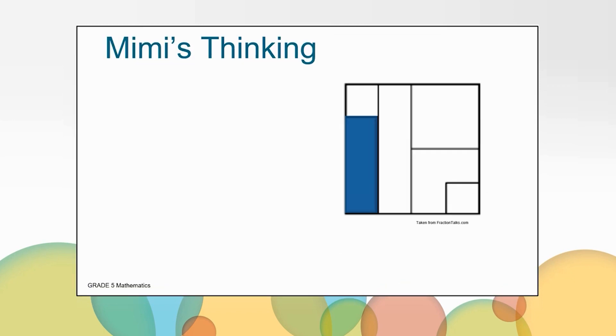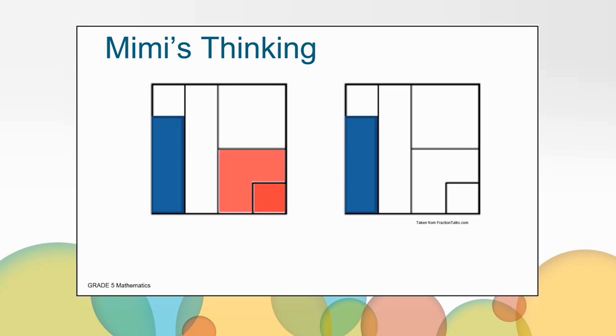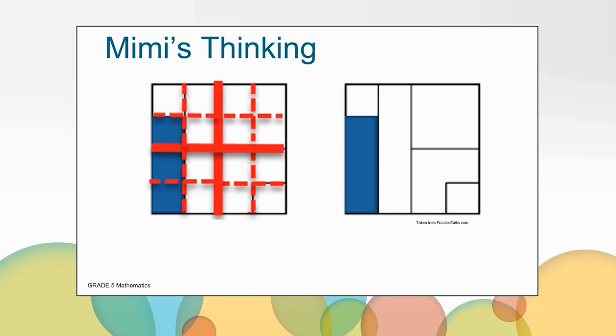We're going to look at two different ways that students thought about this question. First we'll look at how Mimi solved this problem. First, Mimi used the small unit square at the bottom left, and then she looked at the square that's surrounding it. She made a connection to the fourths that we looked at in the previous question. And then she broke up the red square with the dashed red lines into fourths. How many squares do we have now? That's correct. We have 16 squares within the total square. So, how many of the 16 squares are shaded blue? Yes, three sixteenths of the square is shaded blue. Is this how you thought of your answer?